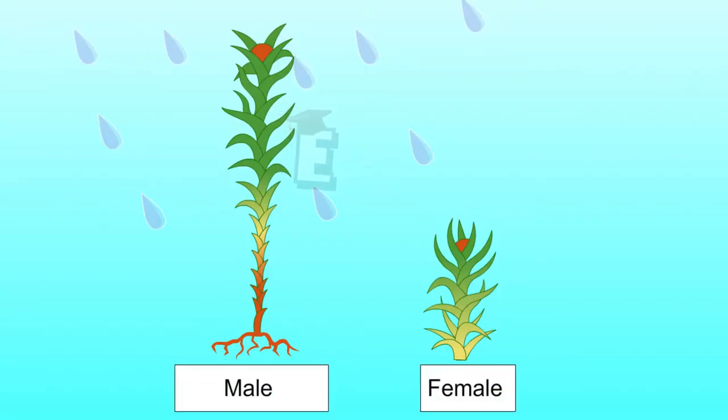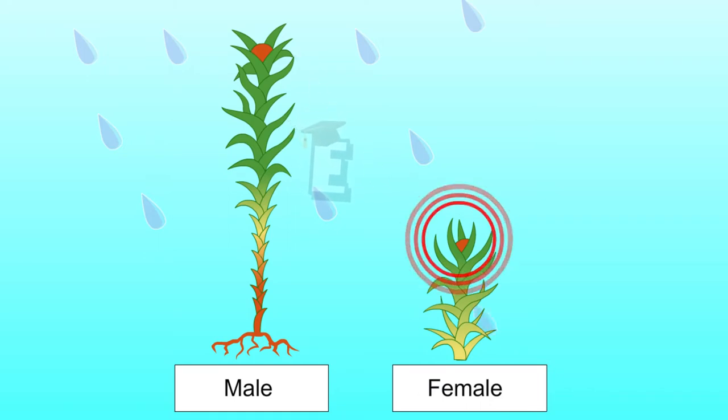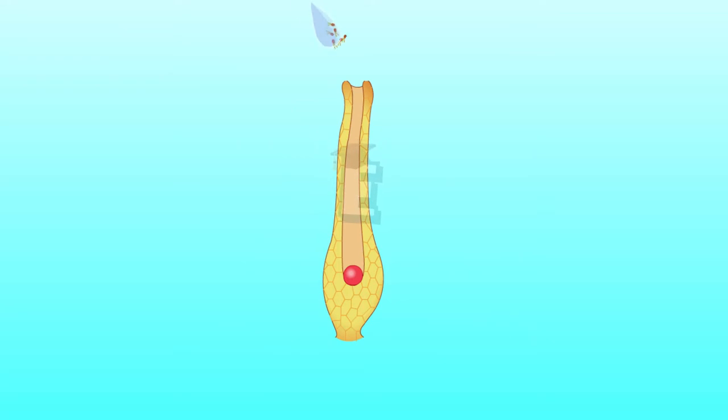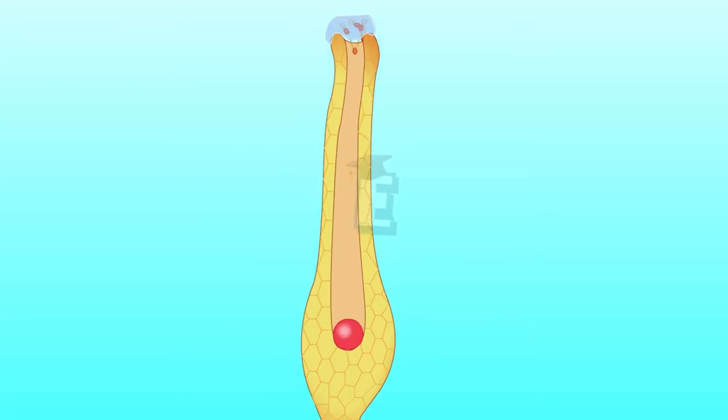Another example is chemotaxis, which is a response to chemical substance as found in the male gamete of moss. The male gamete of moss will move in the water approaching the female gamete because of the stimulus from the female gamete's chemical substance.